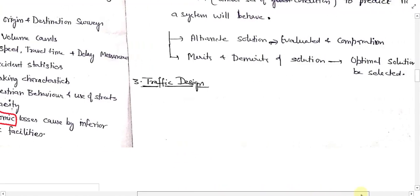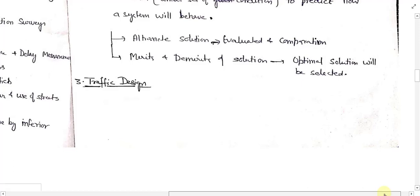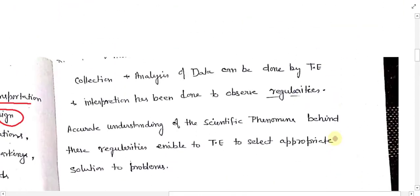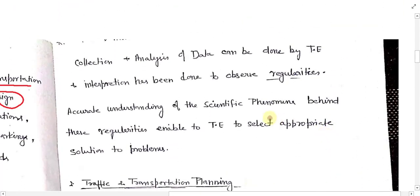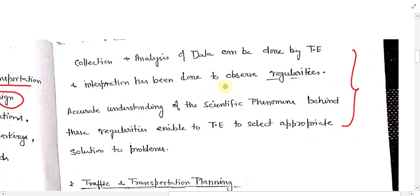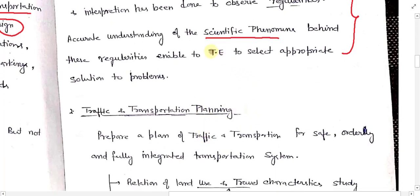Now we move to the third page of these handwritten notes. This portion is related to the first point which is collection and analysis of data done by the traffic engineer and how it is useful for a scientific approach. Please go through these points — 'TE' means traffic engineer.